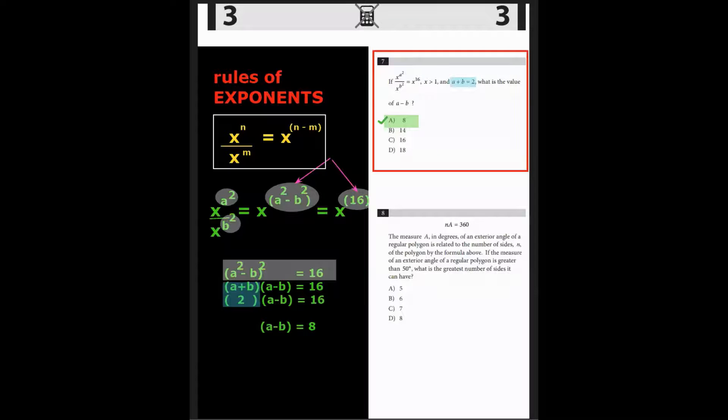Question 7. If x to the a squared over x to the b squared equals x to the 16, x is greater than 1, and a plus b equals 2, what is the value of a minus b? Well, this is a good problem for students in reviews of the laws of exponents.